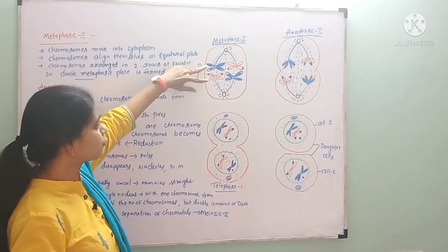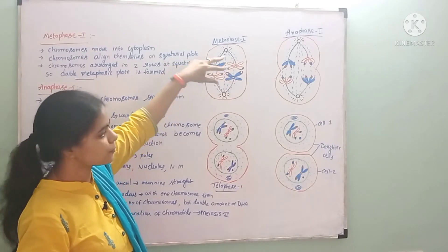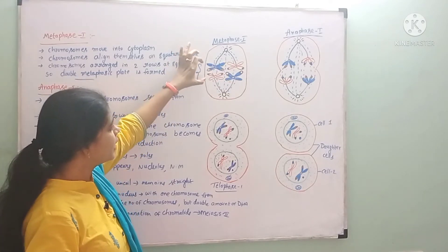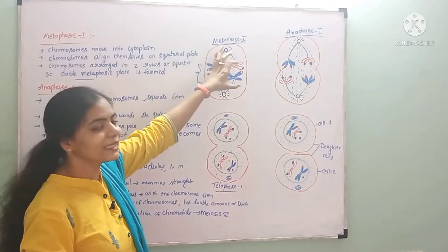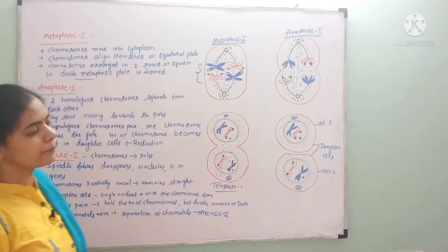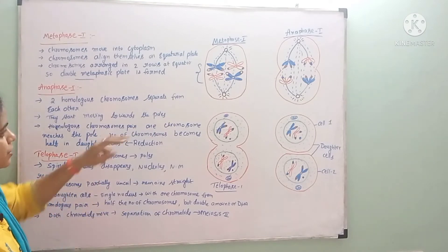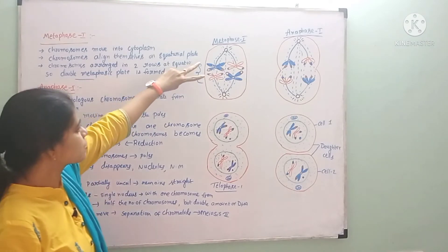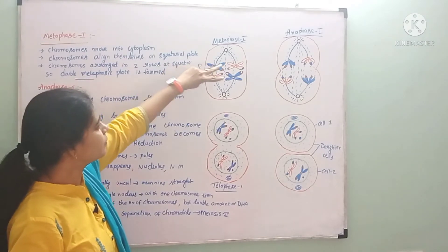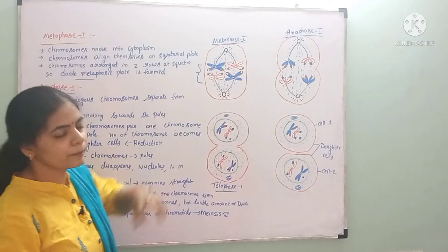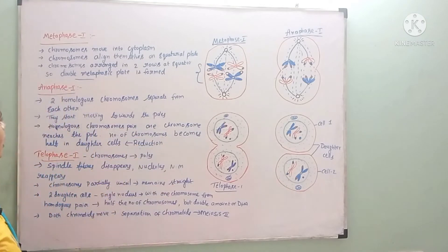Each pair of homologous chromosomes is arranged in two rows at the equatorial plate. This forms a double metaphasic plate, which is characteristic of metaphase 1. These cells are formed in metaphase 1.